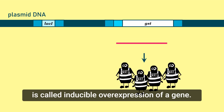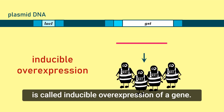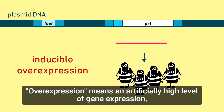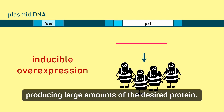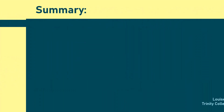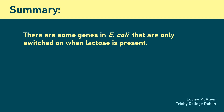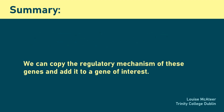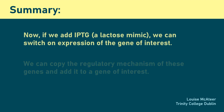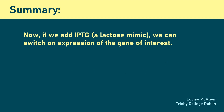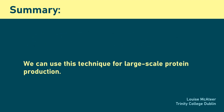The technique described here is called inducible overexpression of a gene. Overexpression means an artificially high level of gene expression, producing large amounts of the desired protein. There are some genes in E. coli that are only switched on when lactose is present. We can copy the regulatory mechanism of these genes and add it to a gene of interest. Now, if we add IPTG, a lactose mimic, we can switch on expression of the gene of interest. We can use this technique for large-scale protein production.